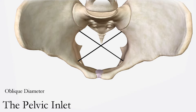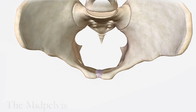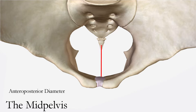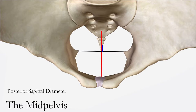The mid-pelvis is measured at the level of the ischial spines. The diameters of the mid-pelvis are clinically important as they correspond to the narrowest diameters of the mid-plane. At this level, three measurements can be made: the anteroposterior diameter, the interspinous or bispinous diameter, and the posterior sagittal diameter of the mid-plane.